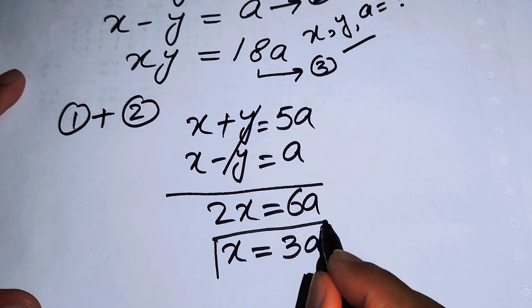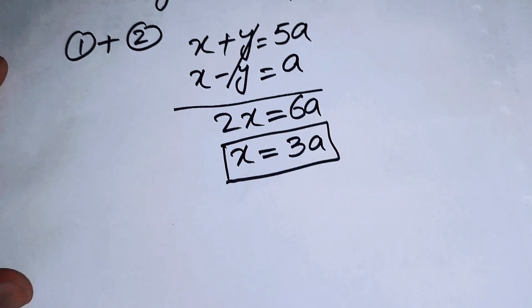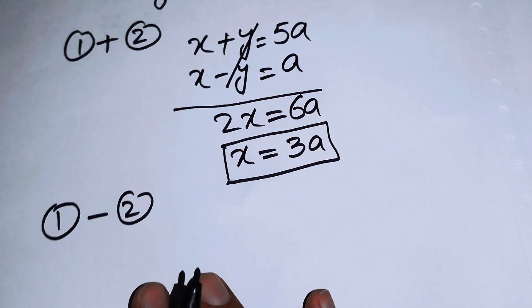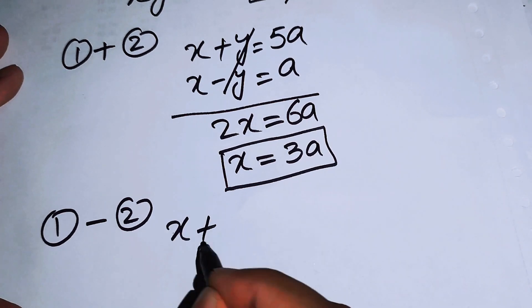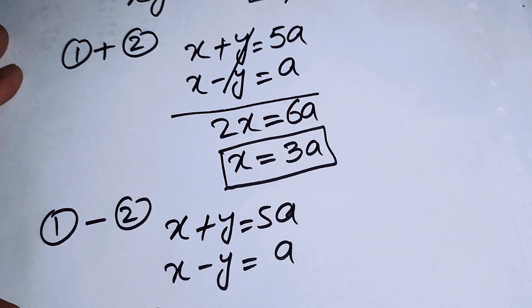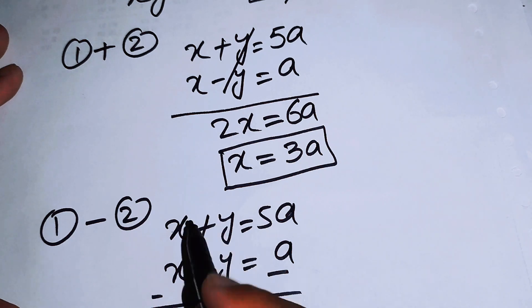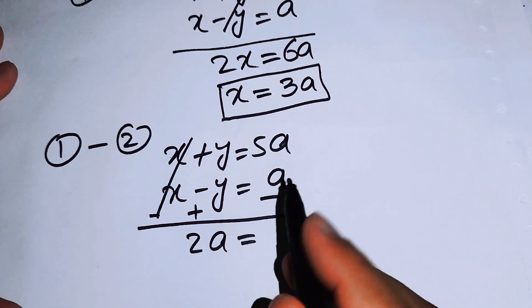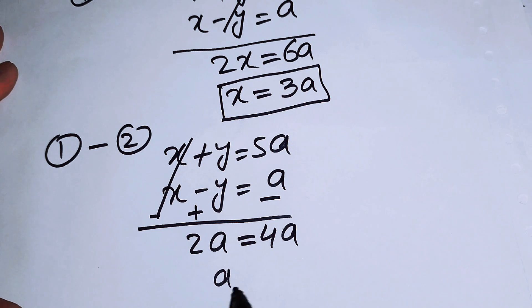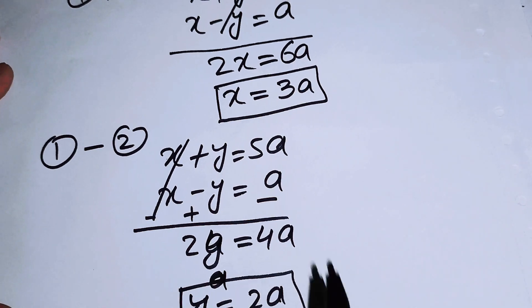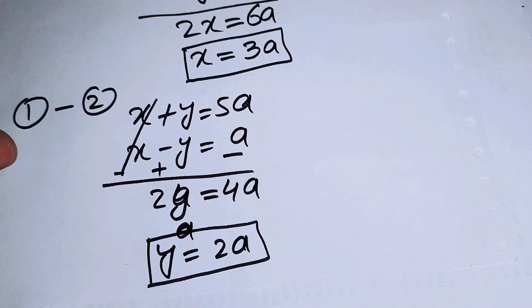Next, we subtract equation two from equation one. We have x plus y equals 5a and x minus y equals a. When we subtract, the x terms cancel out. We get 2y equals 5a minus a, which equals 4a. Therefore the value of y is 2a.